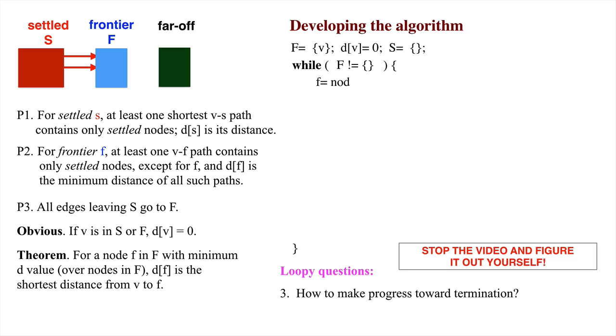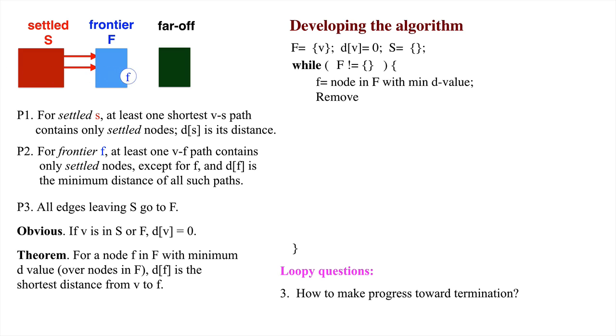Let f be a node in the frontier with minimum d value. The theorem says that d sub f is the shortest path distance from v to f. So, move f from the frontier to the settled set.